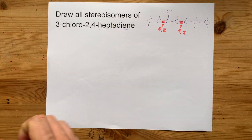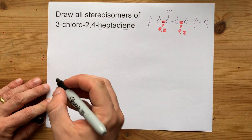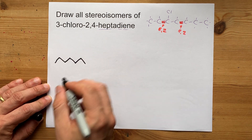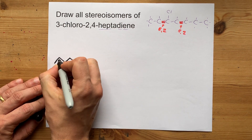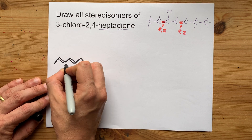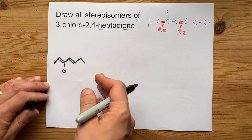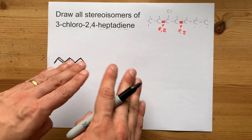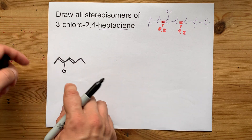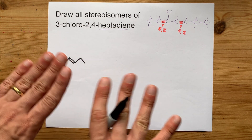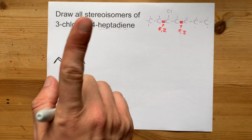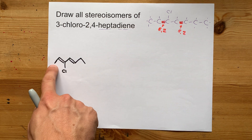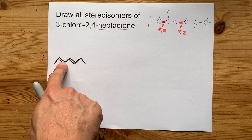Now we're going to carefully draw them. We have a seven-carbon chain with double bonds at C2-C3 and C4-C5, and I'm going to draw my chlorine here. That's one version of this molecule. I've clearly drawn these in a way that makes it look trans, but we're just here to draw them anyway.